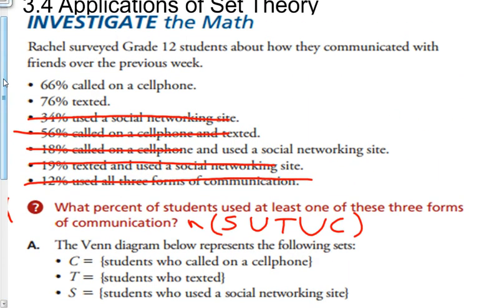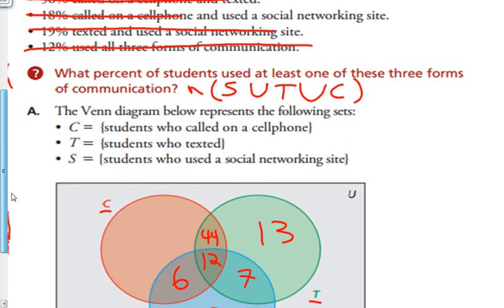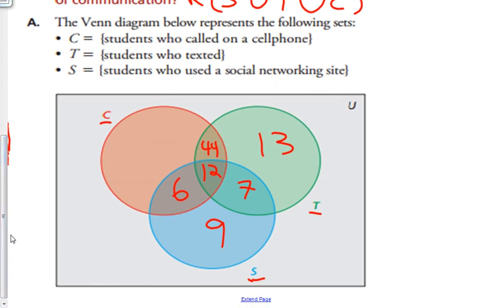And 66% called on a cell phone. 66 minus 44 minus 12 minus 6 gives me 4% of students just called. So now what percent of students used at least one of these three forms of communication? Well let's add up all of these and see what we get.